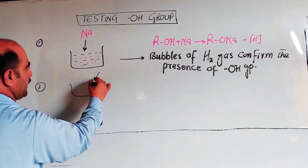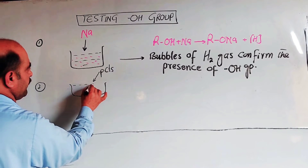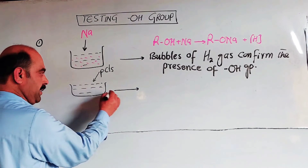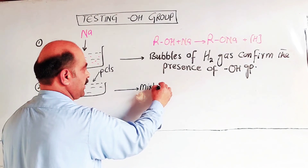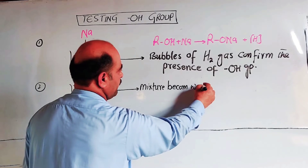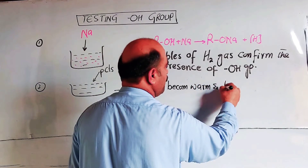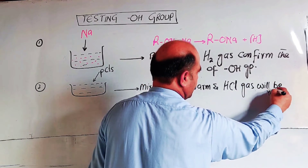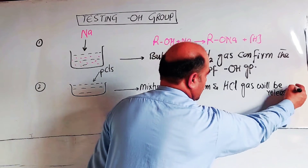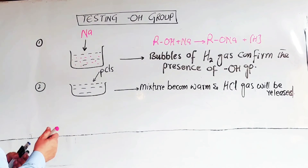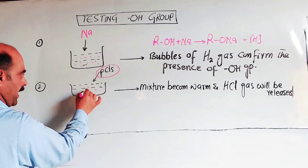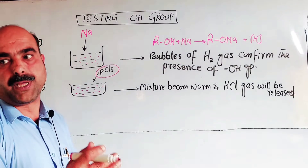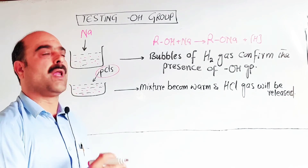For the second test, add PCL5 (phosphorus pentachloride) to the given compound. If the mixture becomes warm and HCL fumes are evolved, it means the given compound has an OH group present, confirming it is an alcohol. The reaction is ROH plus PCL5 giving alkyl halide plus HCL plus POCl3.